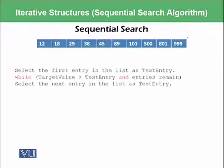This means we will have this statement that select the first entry in the list as test entry. As we have said in the previous discussion, we will get this 12 in the test entry.